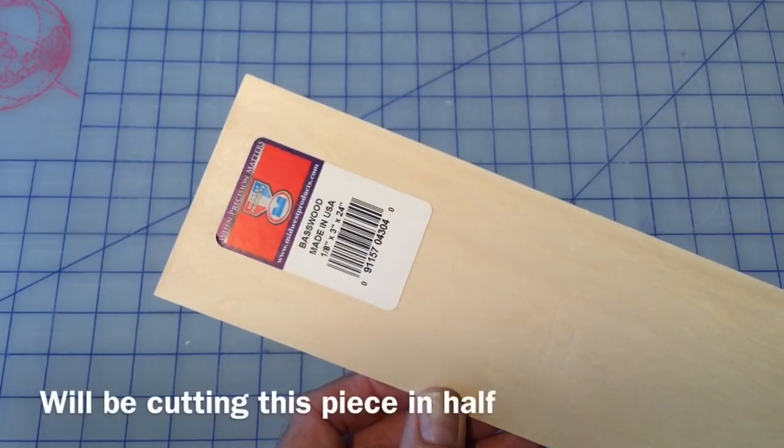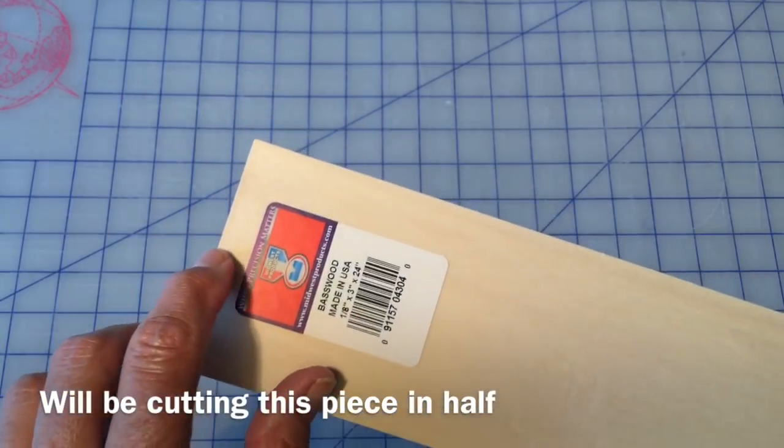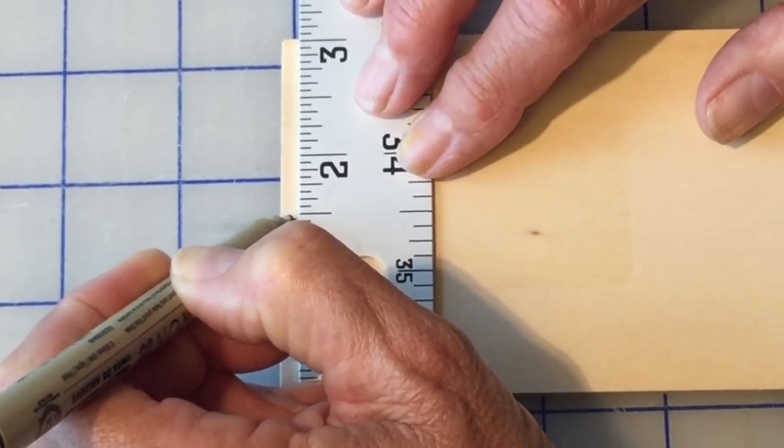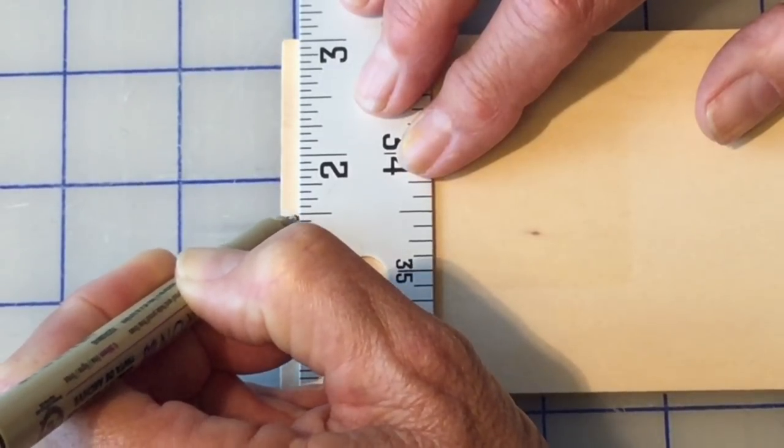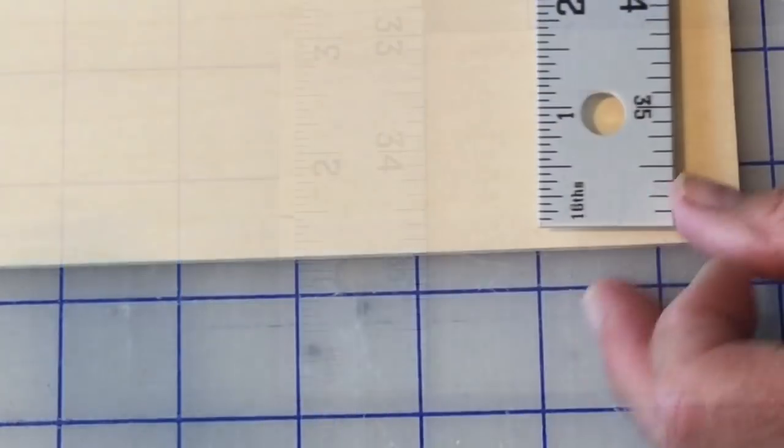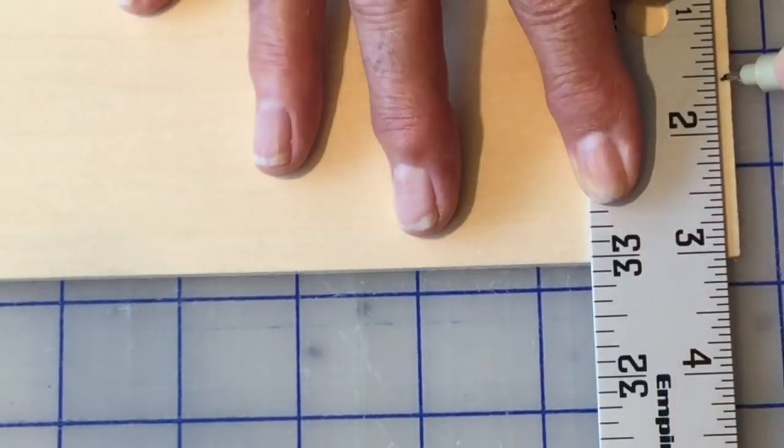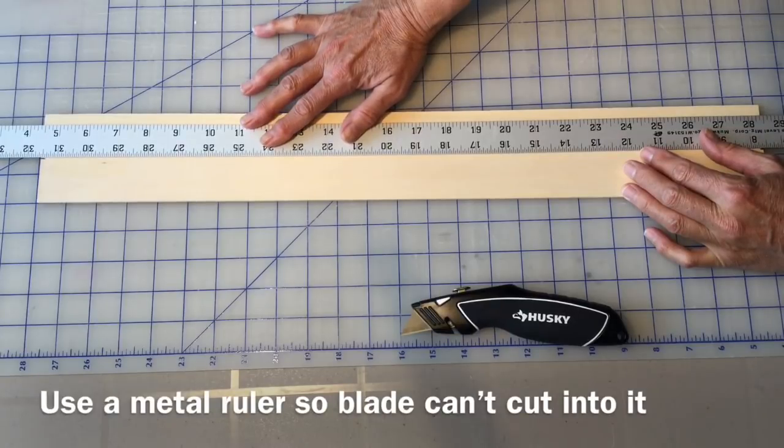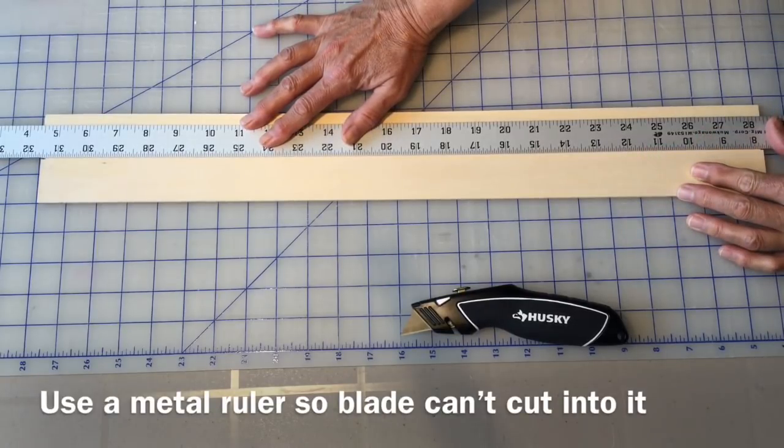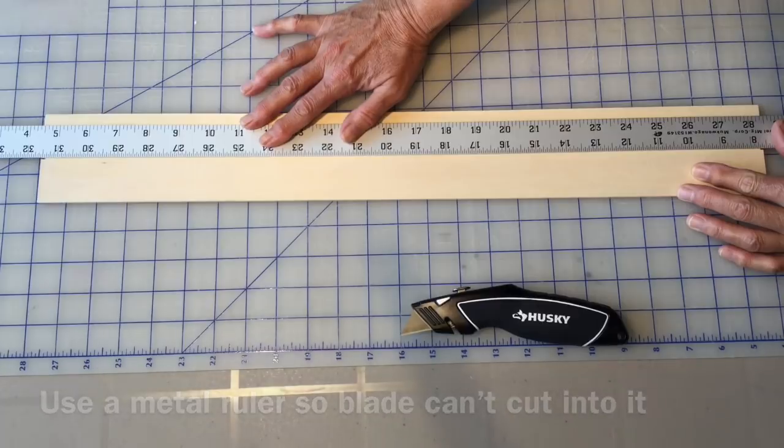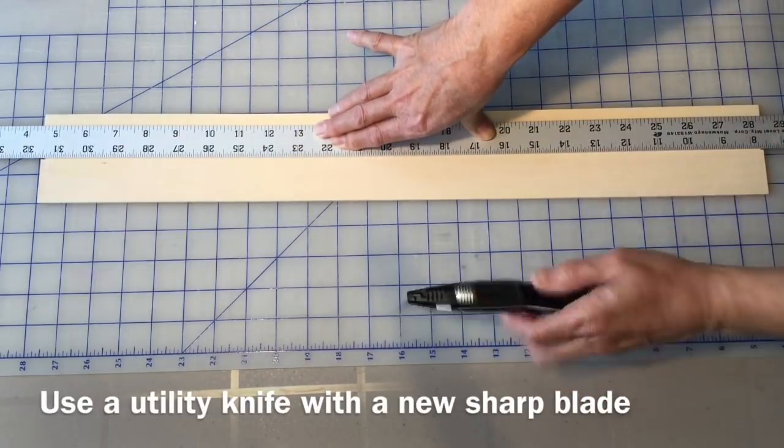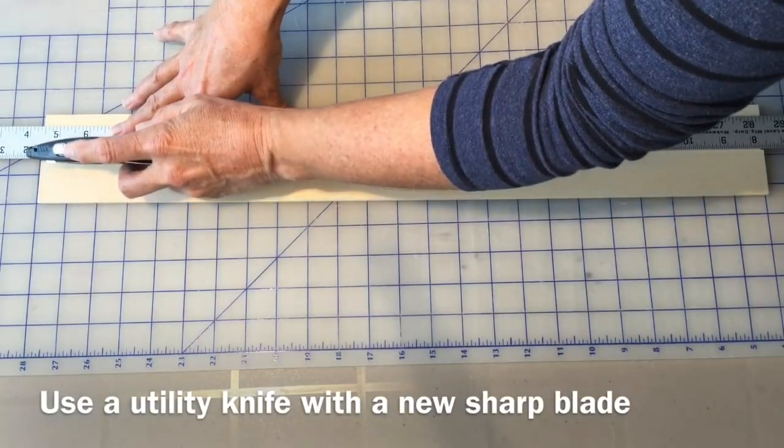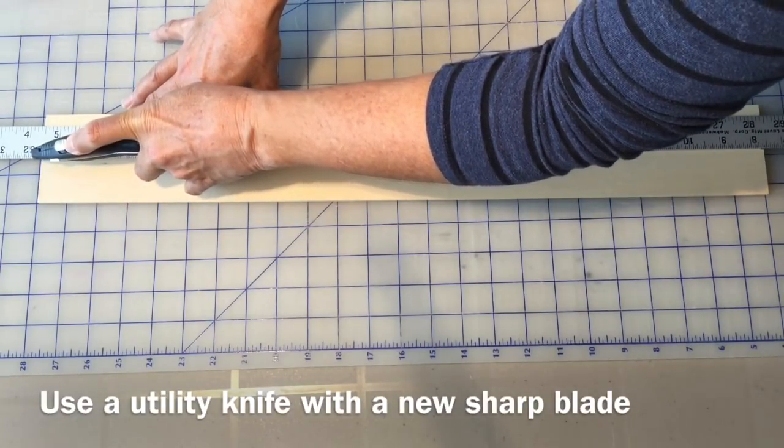I'll take this piece of basswood and I'm going to be cutting it down the middle. I'm just going to mark my 1 1/2 inch mark here on the one end and on the other end. I'll take a metal ruler and line up my two lines I've made and using a utility knife I'll score down.